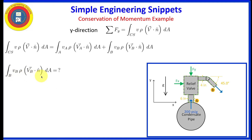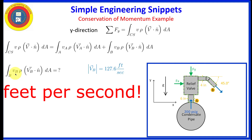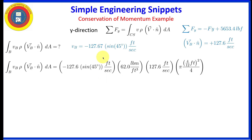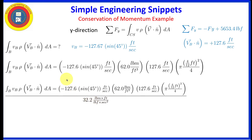Now let's work on the integral at bravo. The velocity magnitude at bravo is 127.6 feet per second. The y component of velocity at bravo is minus 127.67 times sine 45 degrees — from geometry — so it is in the negative y direction. The dot product for this outflow returns a positive value equal to the magnitude of the velocity vector at bravo. Integrating over the area at bravo and including g sub c, we get minus 1,934.5 pounds-force. This is the same magnitude as the x-direction result because sine 45 equals cosine 45, but with a negative sign due to the minus y component.